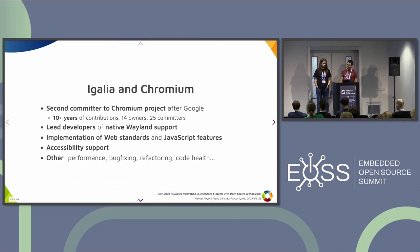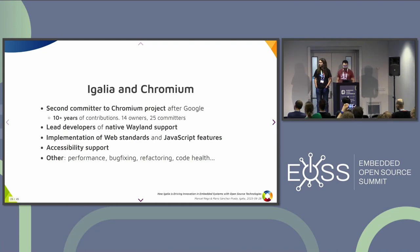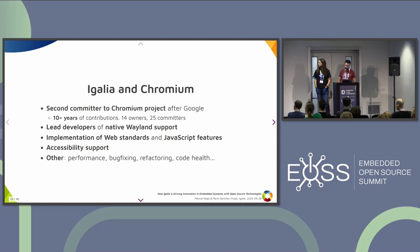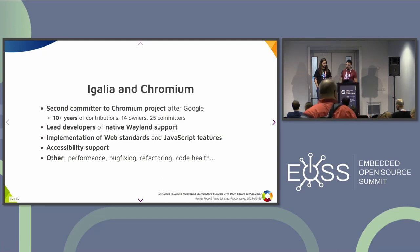Igalia's relationship with Chromium is also a long one — we were working in WebKit before the Blink fork, and we've had 10 years of contributions with a lot of people integrated into the community. We are the lead developers of native Wayland support in Chromium. We have implemented different web platform features like CSS Grid Layout, MathML, and many others, as well as JavaScript features in Chromium and V8. On accessibility, we've been improving and fixing issues across all platforms. We also do work on runtime performance, code health, refactoring, and general bug fixing.